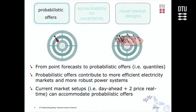We have to move from point forecasts to probabilistic offers such as quantiles, intervals, and density functions. Using probabilistic offers can contribute to more efficient electricity markets and more robust power systems.